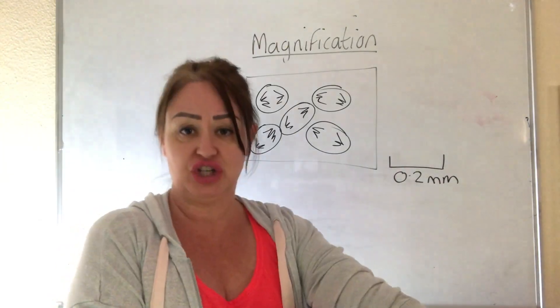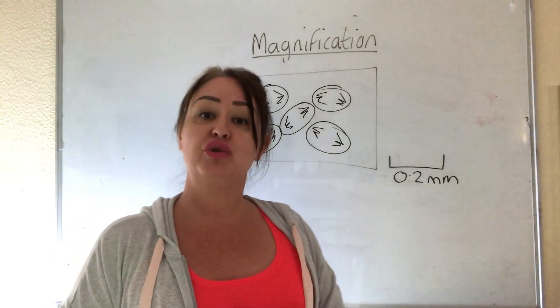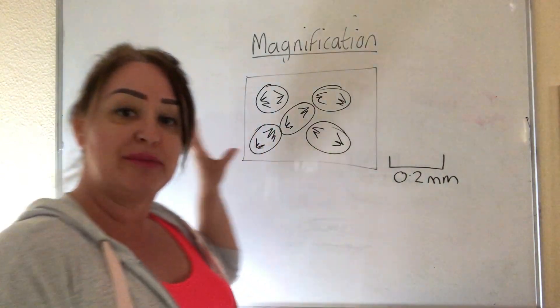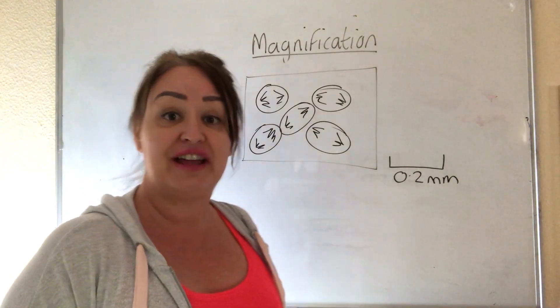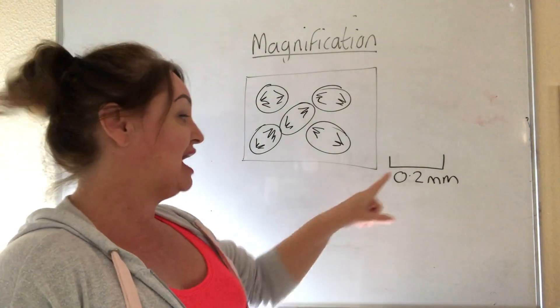Now this is a classic question about magnification where it doesn't want you to work anything out. It might provide you with an image like this of cells in the anaphase of mitosis and it's got the scale bar there so you can work out the magnification.